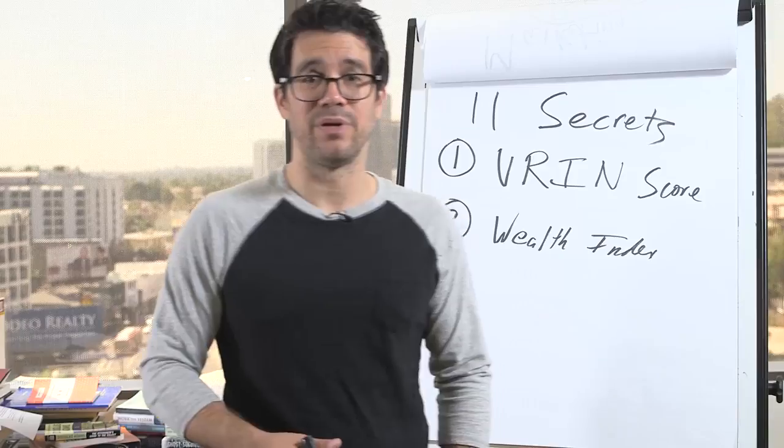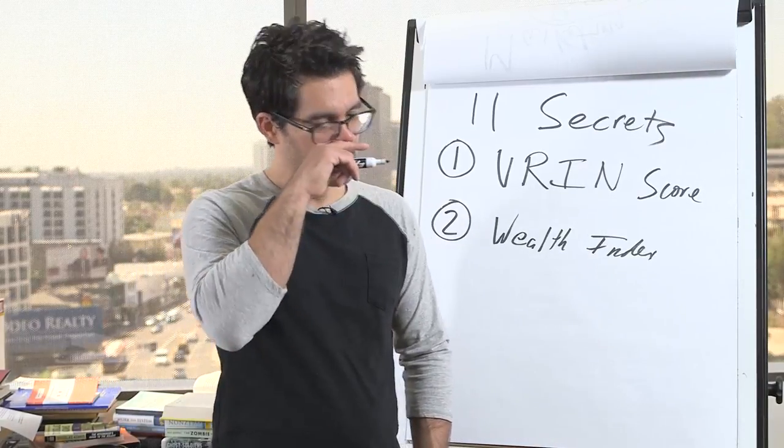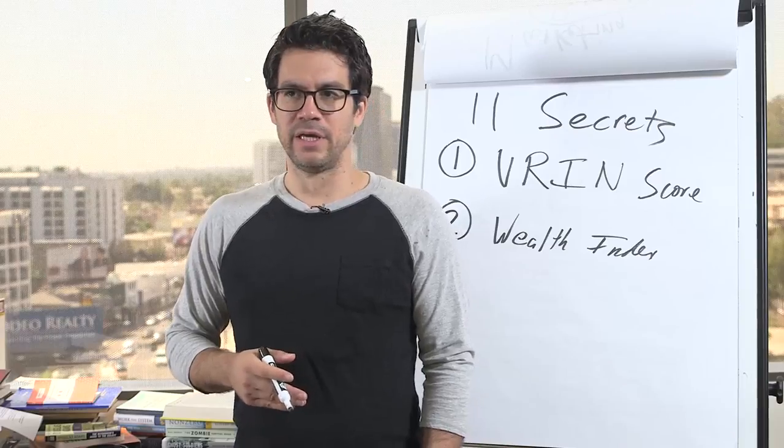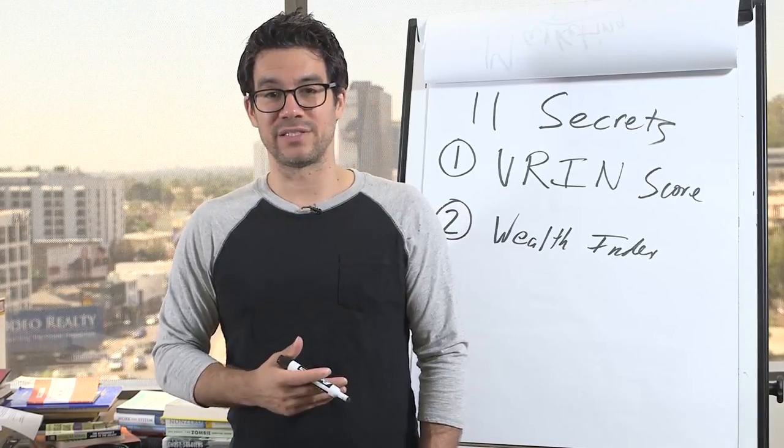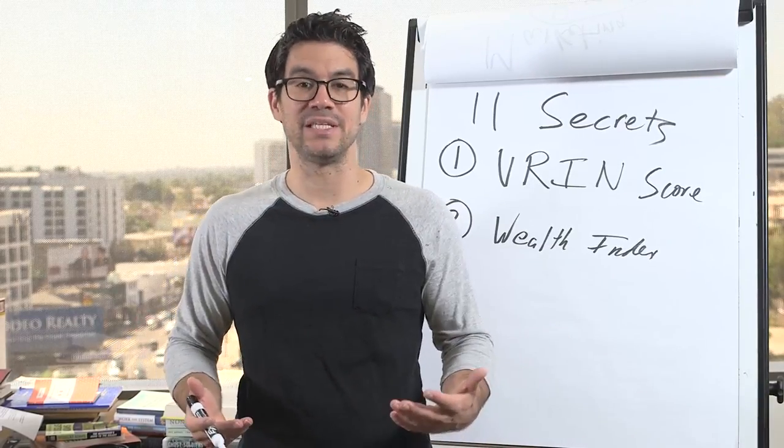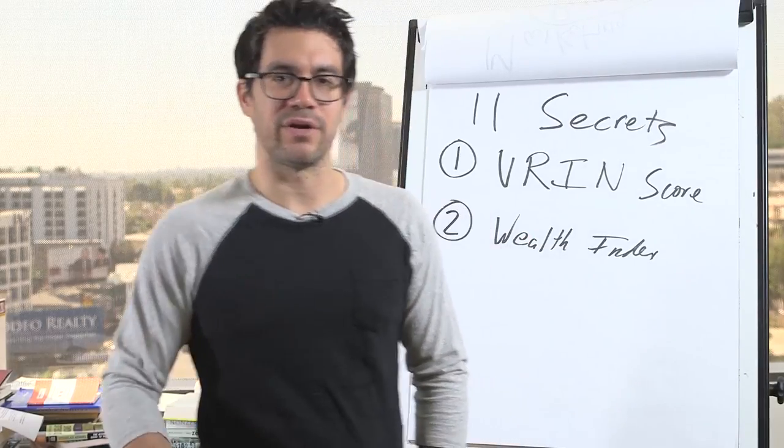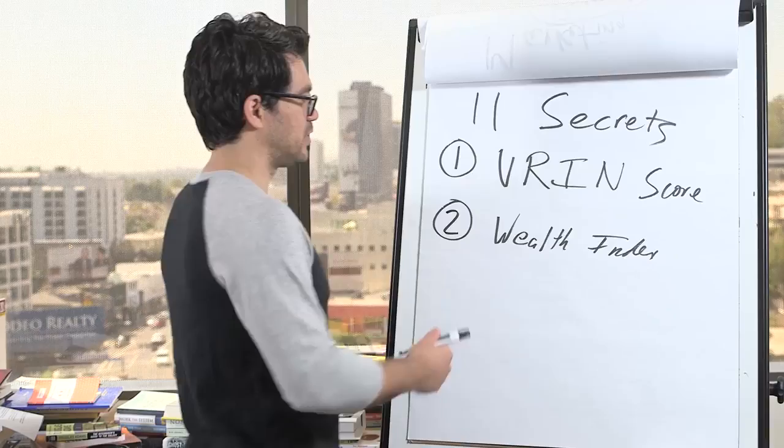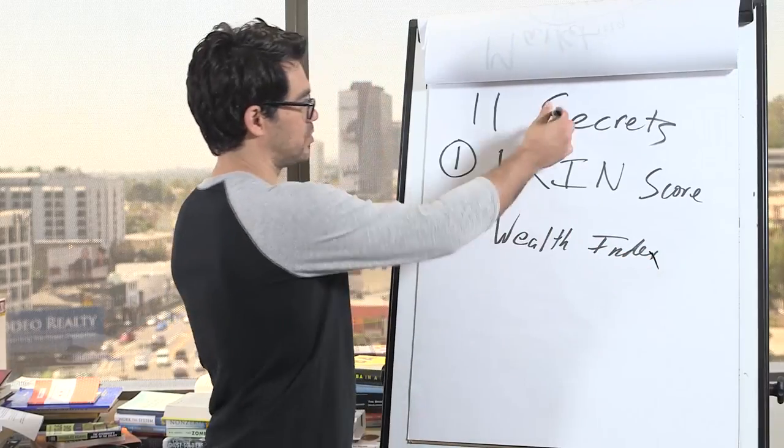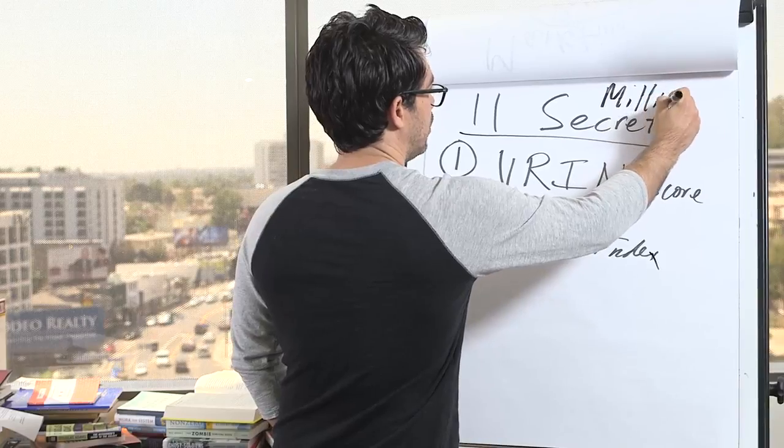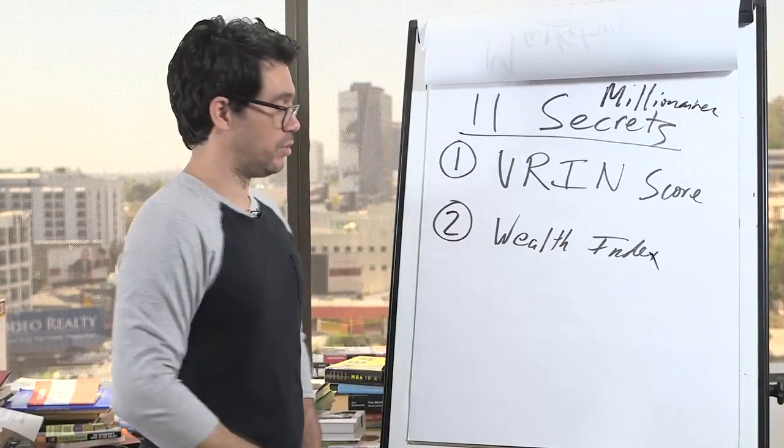So you got to accumulate. It's not how much you make, it's how much you keep. I got a friend who made $120 million last year. And he has a very high wealth index. He kept like $90 million. This is a young guy, like in his 30s, who also self-made, didn't inherit the money, didn't have a trust fund, any of that stuff. So your wealth index, that's 11 secrets. Millionaires know, some millionaires don't know it, but the good ones do.